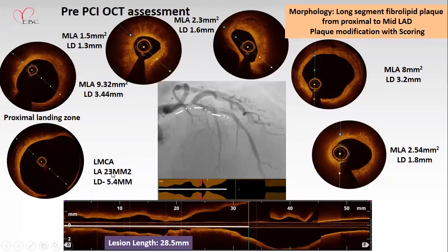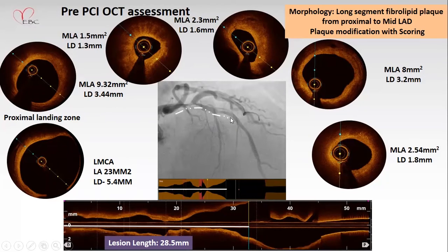On OCT, the left main lumen area was 23 square mm with diameter 5.4 mm. The proximal landing zone minimum luminal area was 9.32 square mm with diameter 3.5 mm. We took OCT further distally and, although we thought the block was not significant angiographically, OCT showed a significant lesion with MLA of 2.5 square mm and diameter 1.8 mm — indicating the stent needed to be extended to that level.